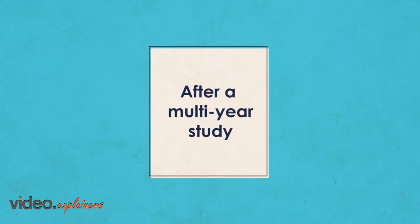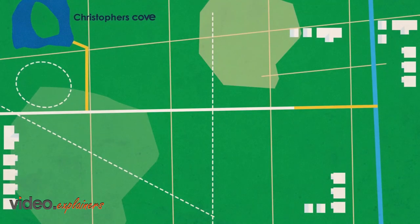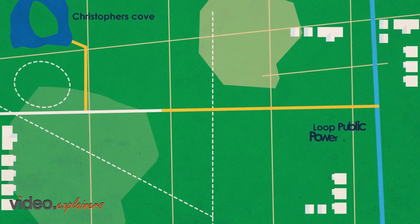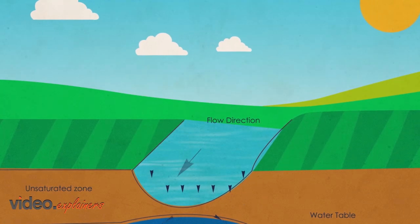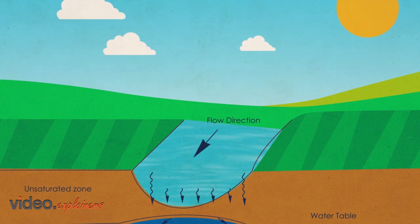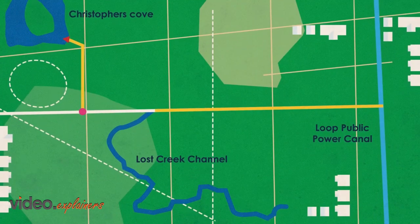After a multi-year study, the decision was to carry water by pipeline from the Tailrace Canal to the Lost Creek Channel. Water in the channel would then leach into the ground and raise groundwater levels, and a second pipeline would take water from a well in the creek to the lake at Christopher's Cove.